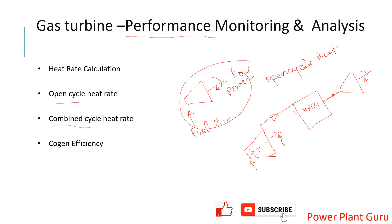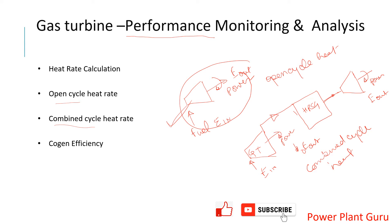You take power from the gas turbine and also from the STG. If you take the total fuel input as energy in and the combined power output as energy out, and combine all of this together to calculate the heat rate, this is called your combined cycle heat rate.